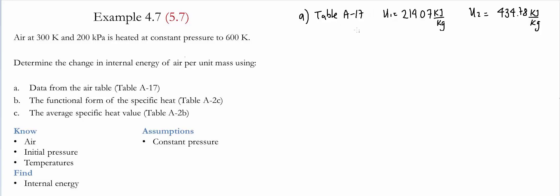From table A17, we were able to find the values for the specific internal energy. In order to find the change, we simply do U2 minus U1. And that difference is going to give us 220.71 kilojoules per kilogram.